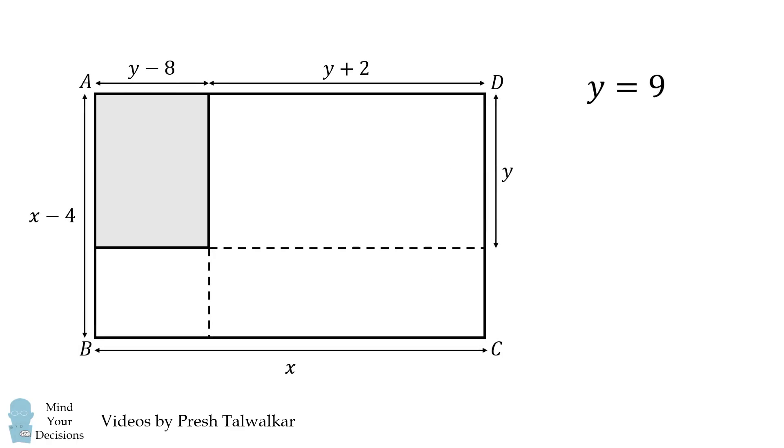We then calculate the length of AD. It'll be equal to 1 plus 11. The total length will be equal to 12, and that's the length of BC, because opposite sides in a rectangle have the same length.